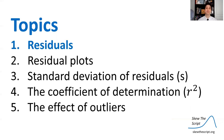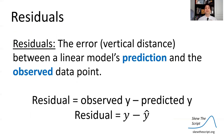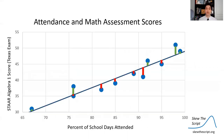We're going to talk about the idea of residuals. A residual is the error, or the vertical distance, between a linear model's prediction and the actual observed Y-value of a data point. Here's the formula for residual.